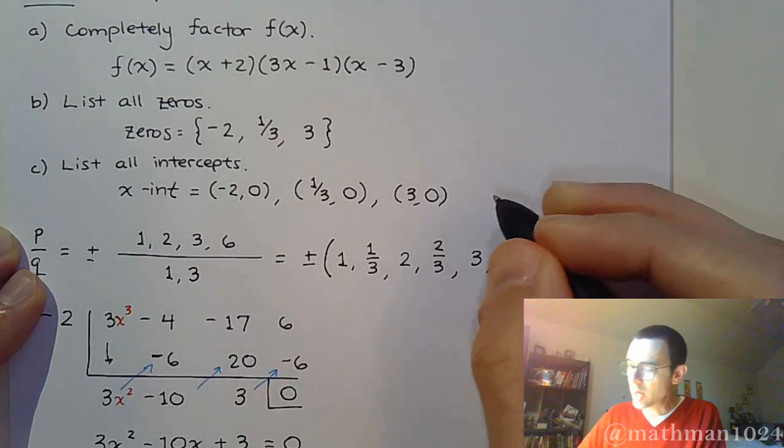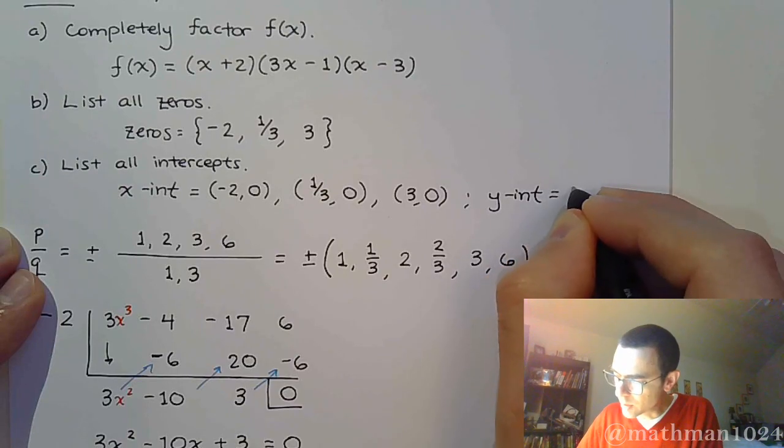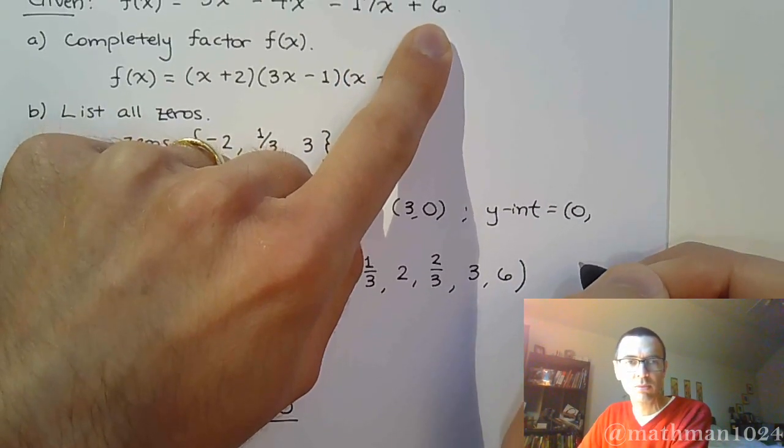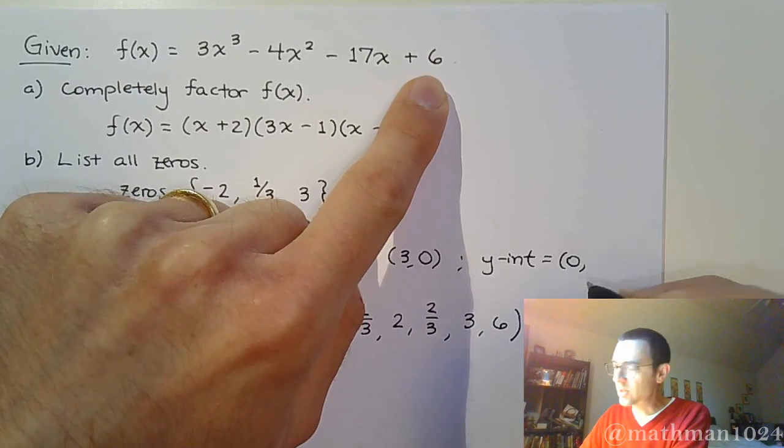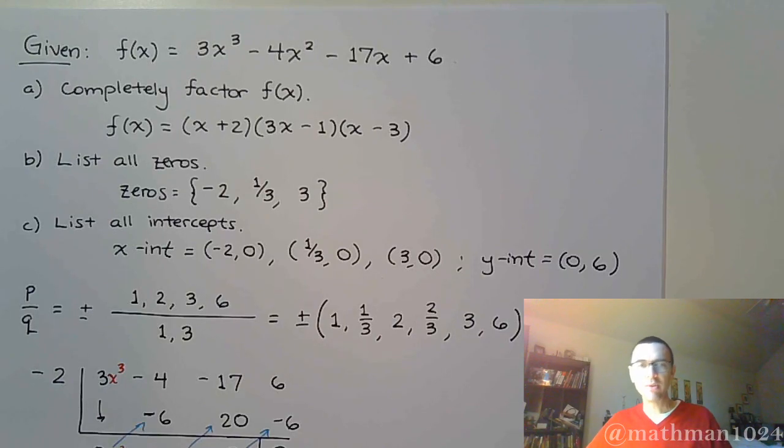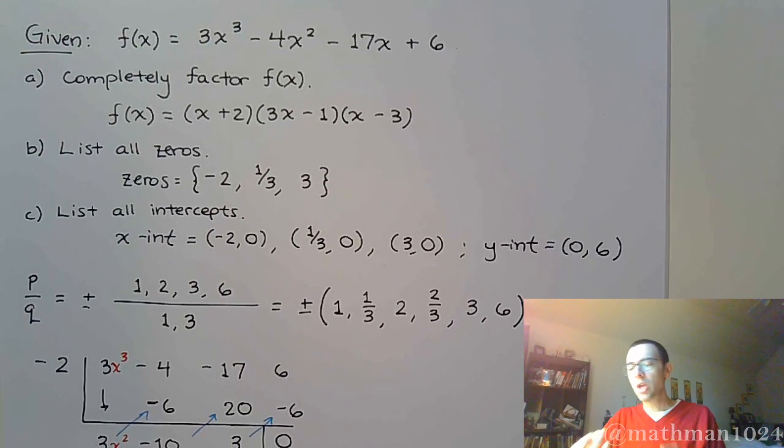Don't forget your y-intercept. So, your y-intercept is going to be 0 comma, oops, sorry, there you go, 6, it's that constant term. So, there we have it. We've answered everything about this question. We've found all the factors, we've found all the zeros, we've found all the intercepts, including the y-intercept.